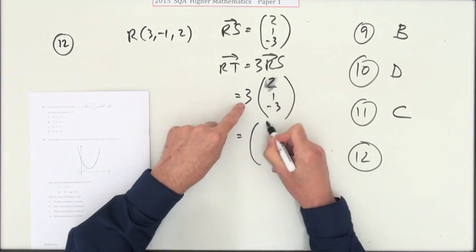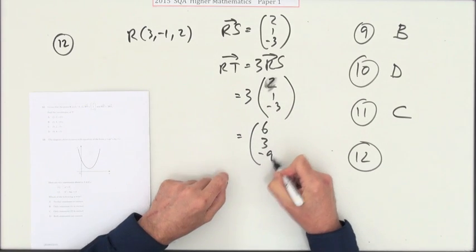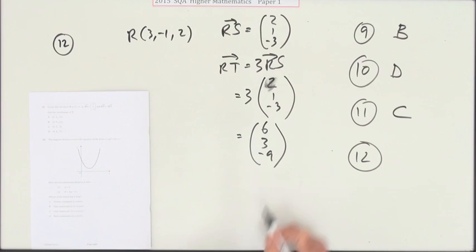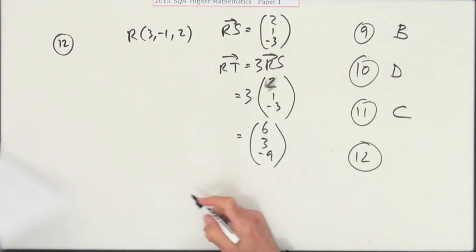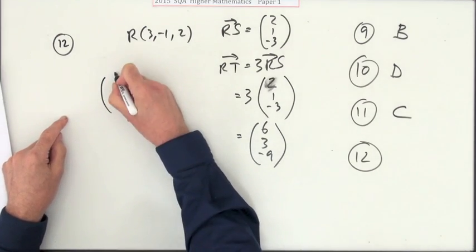So that's the move that takes you from R to T. So if that's R, position vector, then to get to T you have to follow this move, going from R to T.